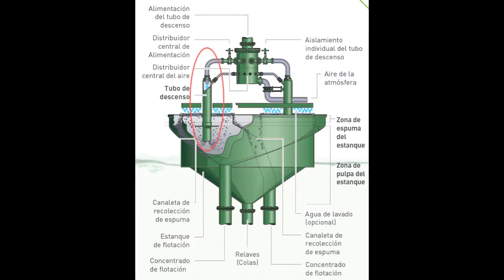We've seen now that the downcomer is a vital part of the Jameson cell — that's where air is drawn into the feed and dispersed into fine bubbles. The particles in the feed are collected by the bubbles and transported into the froth layer and out of the cell. The high efficiency of the Jameson cell is due to the high capture rates in the downcomer.